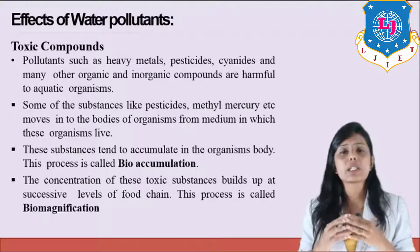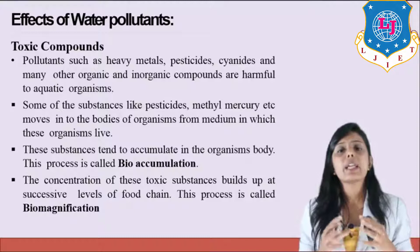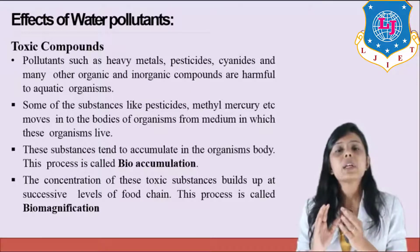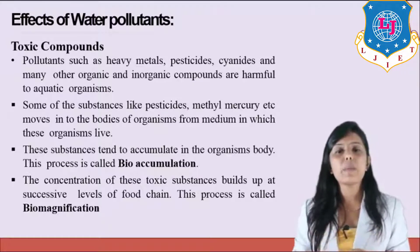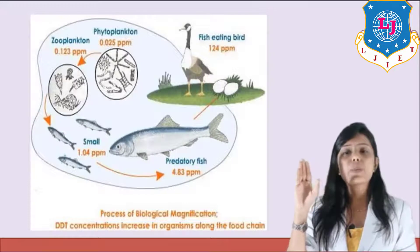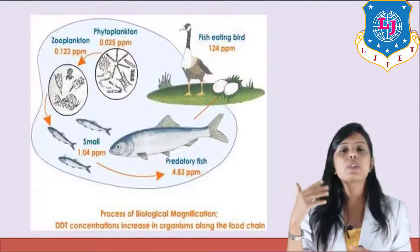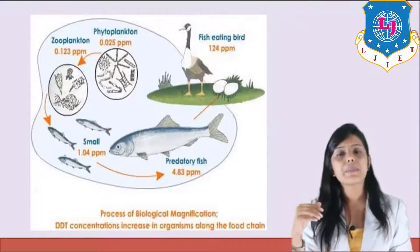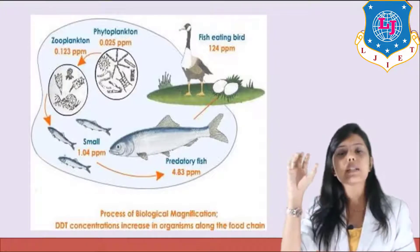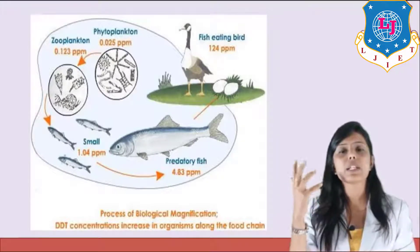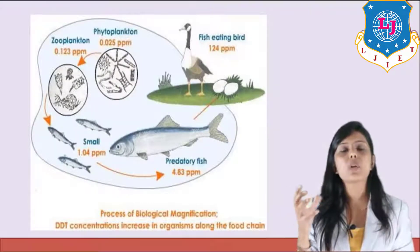So, whenever any toxic compound enters a living organism, that is bioaccumulation. When its concentration increases as it is passed from one organism to another, that is biomagnification. In the food chain — from phytoplankton to zooplankton to small fish to big fish — the concentration of toxic compound keeps increasing at each step.